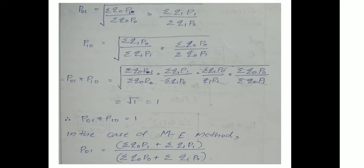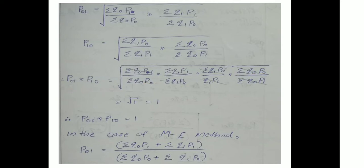P10 equals the square root of (summation Q1·P0 / summation Q1·P1) into (summation Q0·P0 / summation Q0·P1). Multiplying P01 and P10, the common factors cancel — Q1·P0 cancels, Q0·P0 cancels, leaving root of 1 equal to 1. Therefore P01 into P10 equals 1, so Fisher's test is satisfied.